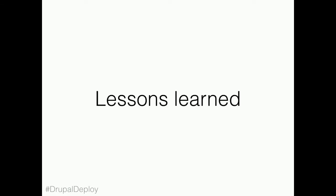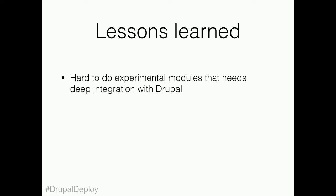Let's cover some of the lessons learned. We found it pretty challenging to do experimental modules that need very deep integration with Drupal. Experimental modules are a great way of adding new separate functionality. But we've found ourselves having to rely on the traditional core contribution or core governance model for making these very big and sweeping changes, and that's still slow and hard. Our new governance process and experimental module process doesn't necessarily have a solution to making these deep sweeping changes — touching the entity API, touching the translation API, data storage.